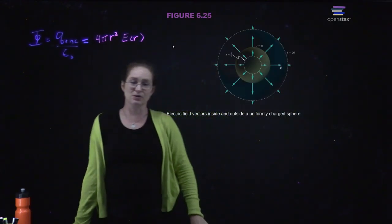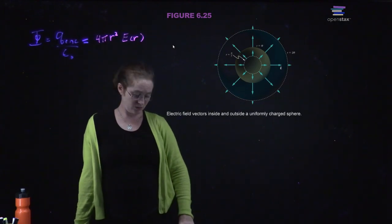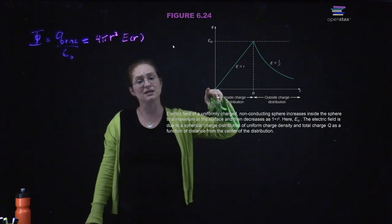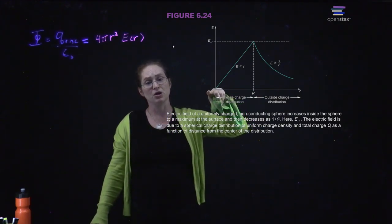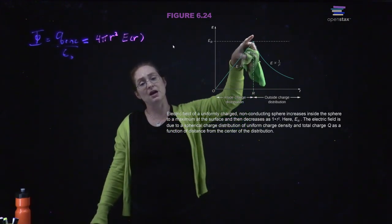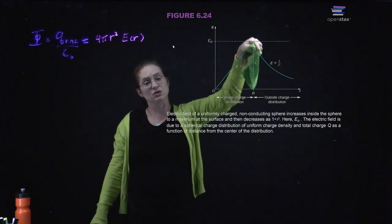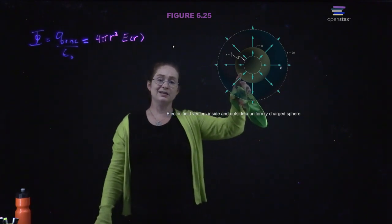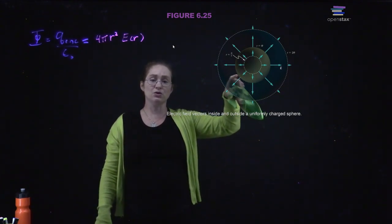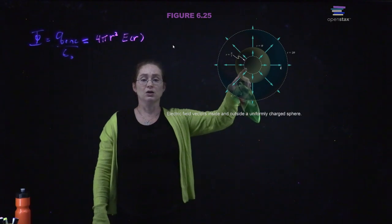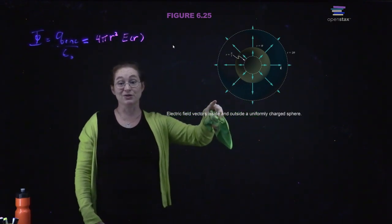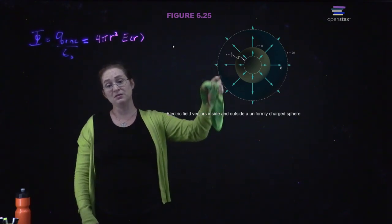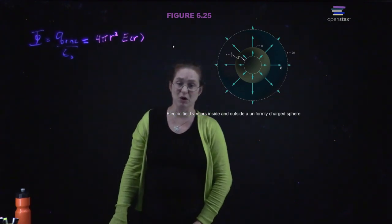The electric field inside an isotropic sphere of charge increases linearly with R. Once you are outside the sphere, the electric field drops off as 1/R². So inside the sphere, as you enclose more and more charge, the field grows; you hit the surface, and then it starts dropping off with 1/R².